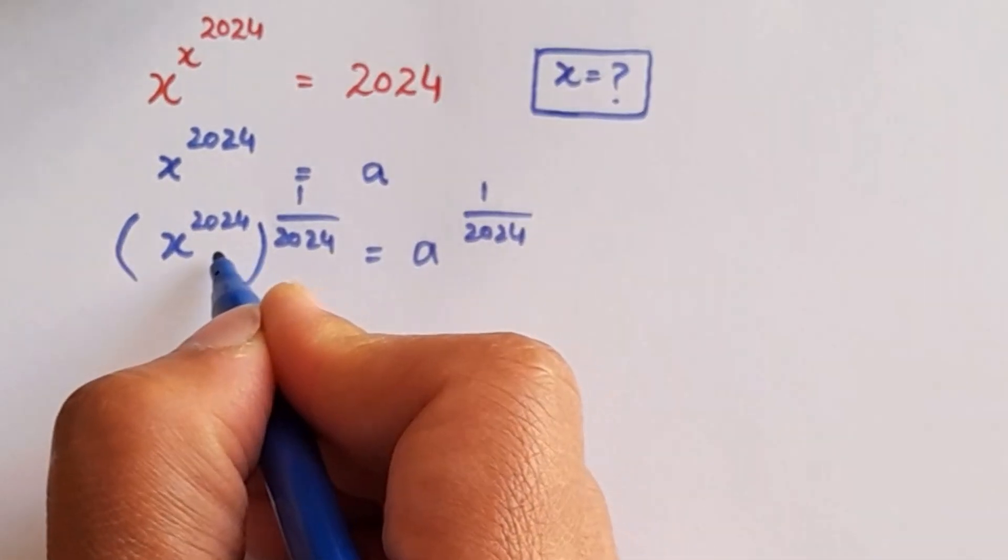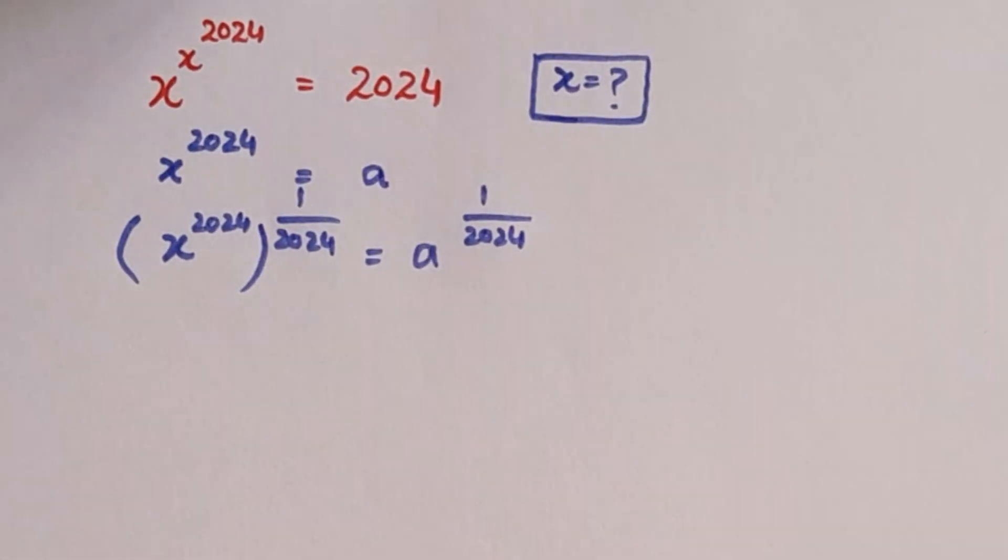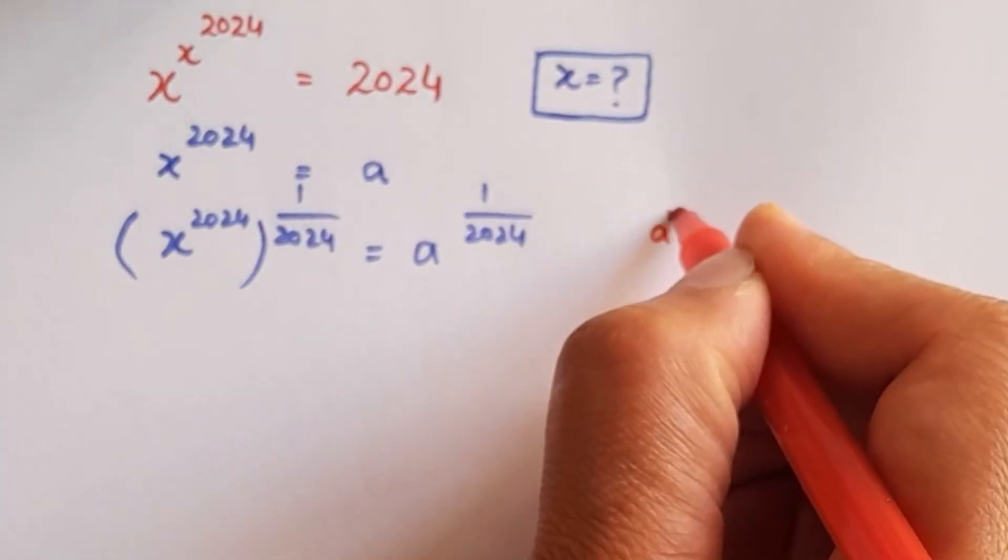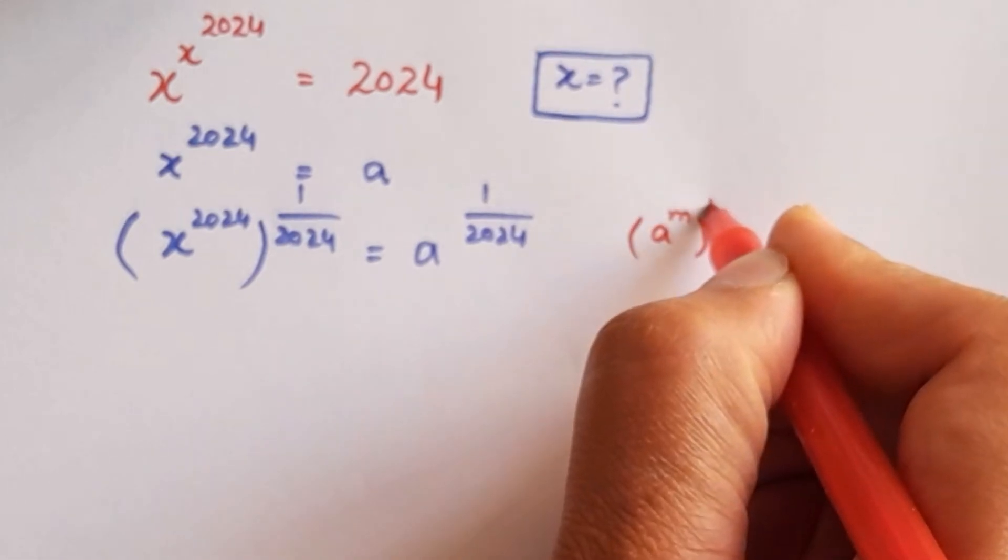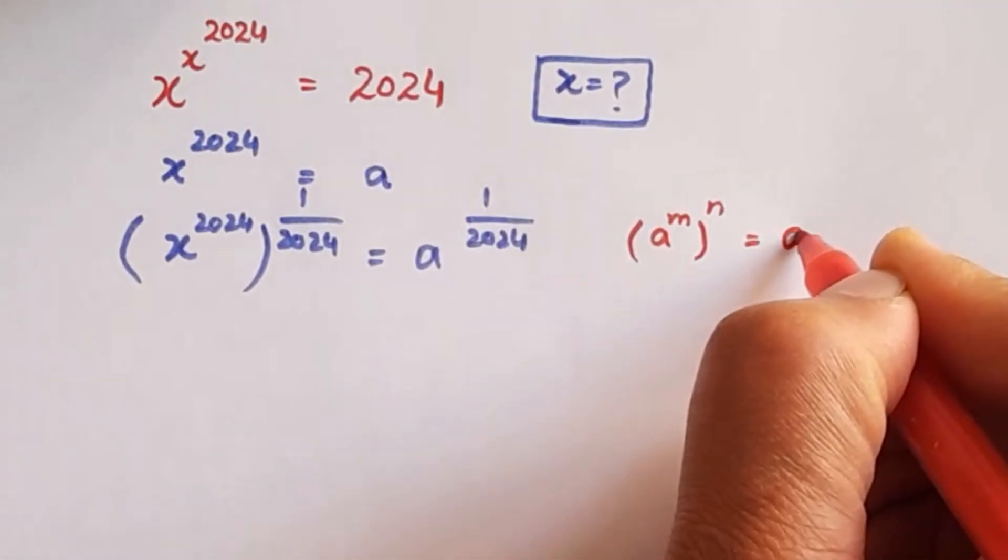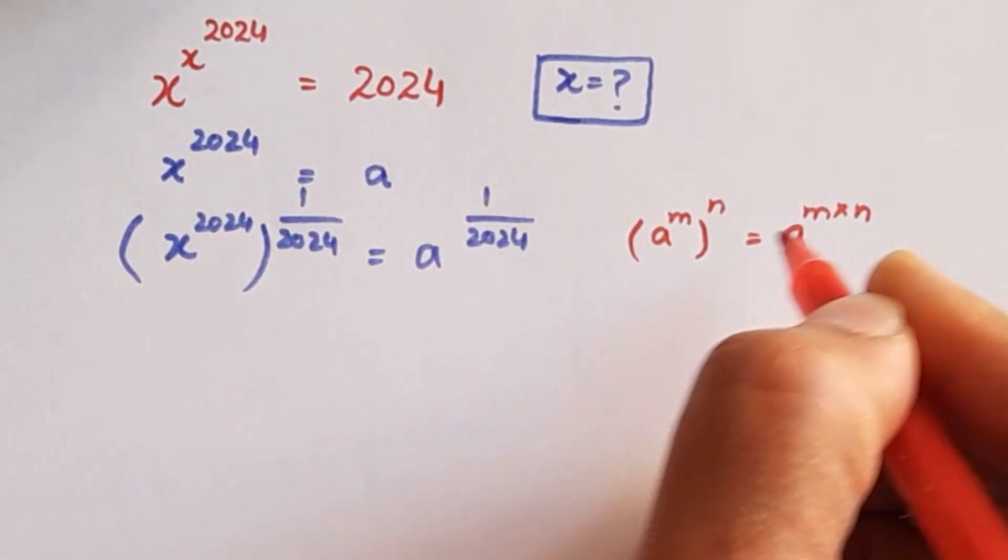To simplify this left hand side, we are going to apply the power of a power rule, which is a to the power m raised to the power n equals a raised to power m times n.